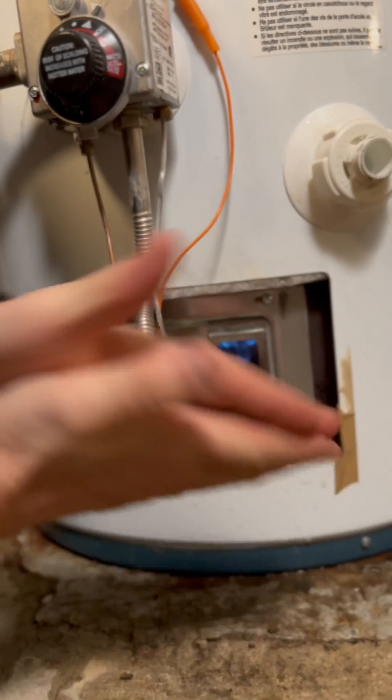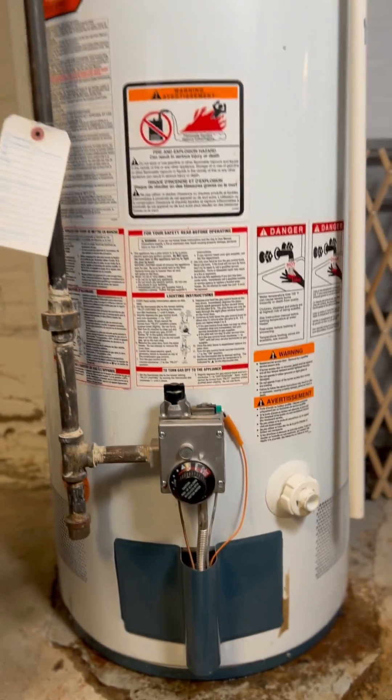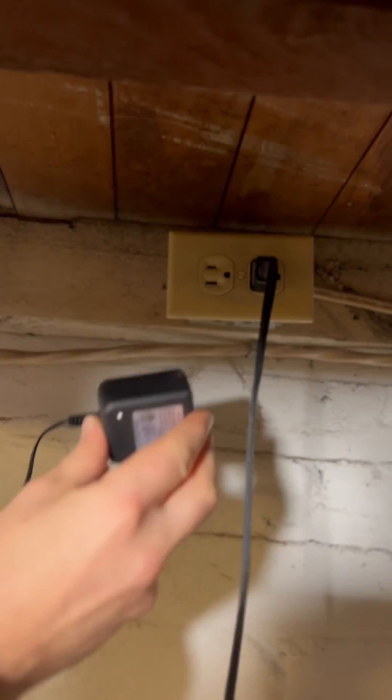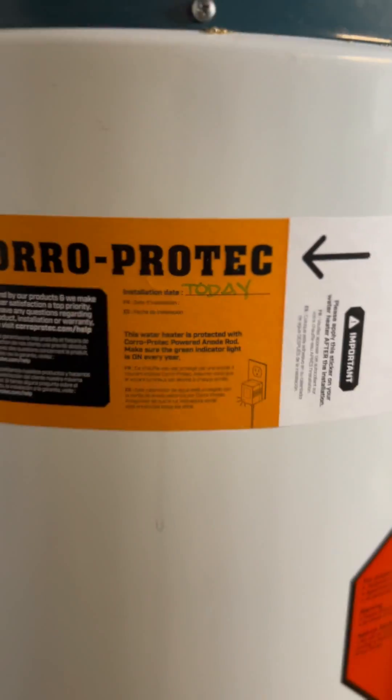you can go back to your regularly scheduled routine of pretending your hot water tank doesn't exist and praying that it never breaks down. And thanks to that CoralProtect anode rod that you just put in there, you did your part to make sure that it won't. And you should be proud of that. So I'll see you next time. Thank you.